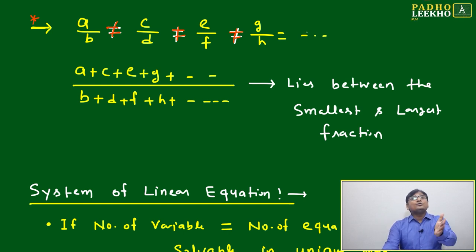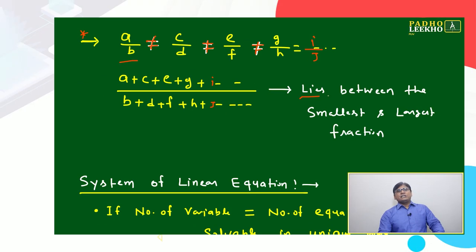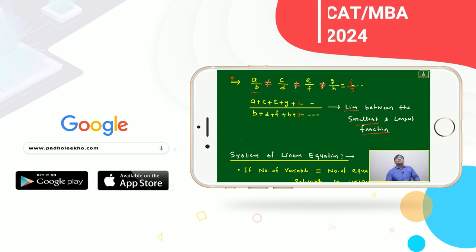You can take the next equivalent ratio, there's no issue, i by j. Then a plus c plus e plus g plus i will be defined, there's no problem. But this will not equal any individual ratio. It will lie between the smallest and largest fraction, anywhere. Suppose the smallest fraction is a by b and the largest fraction...